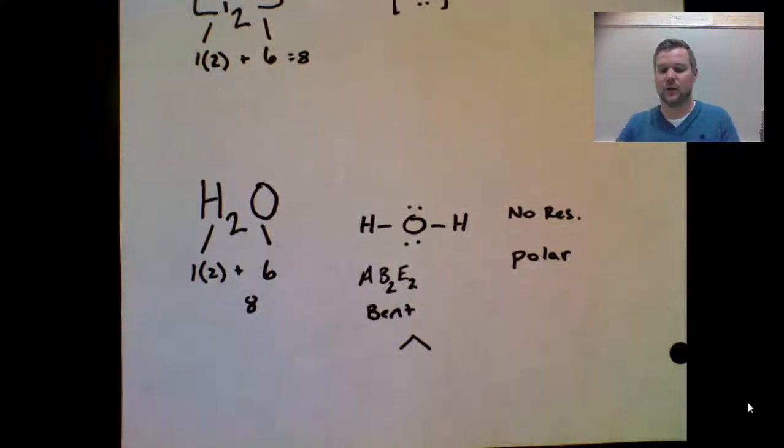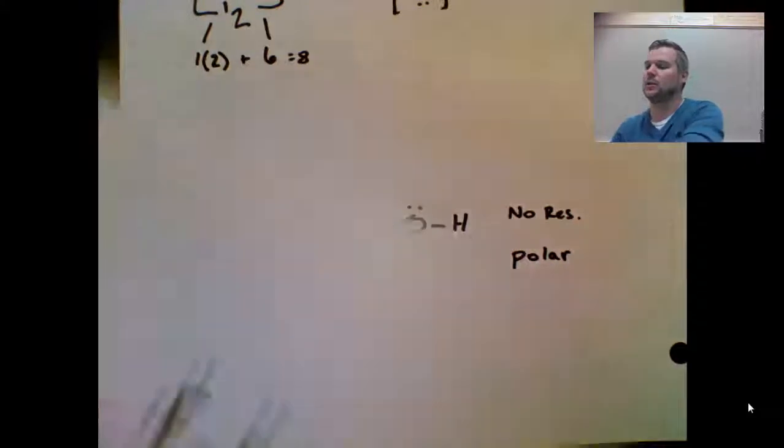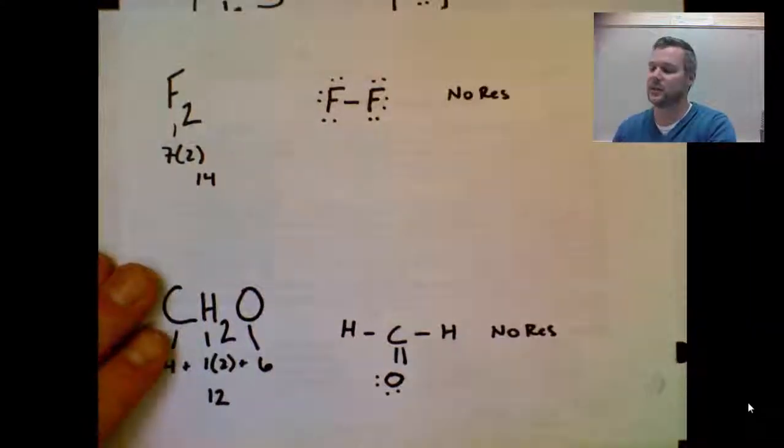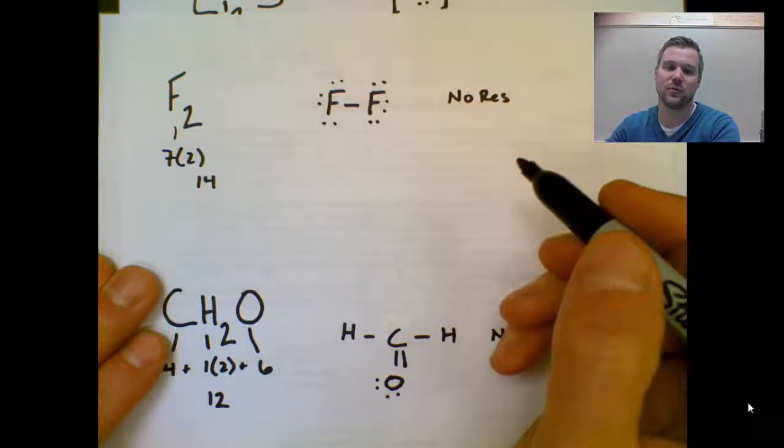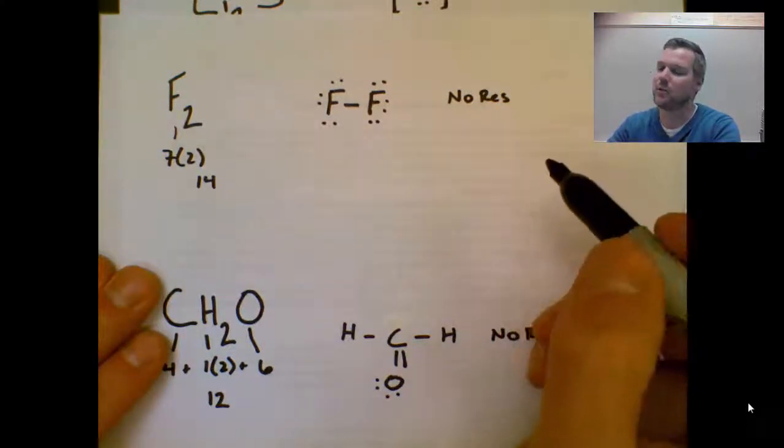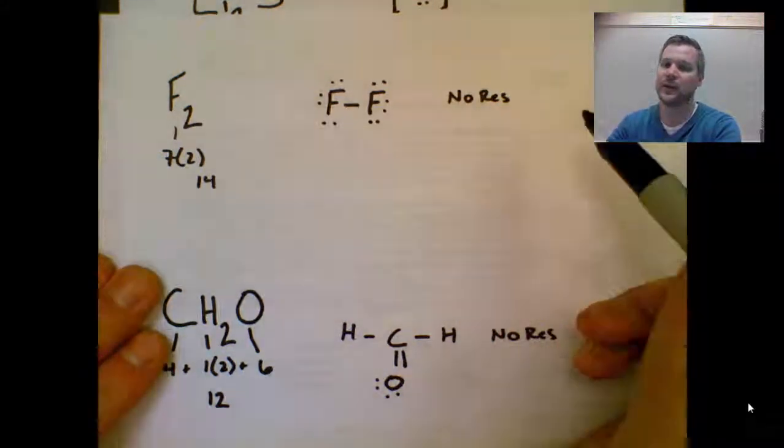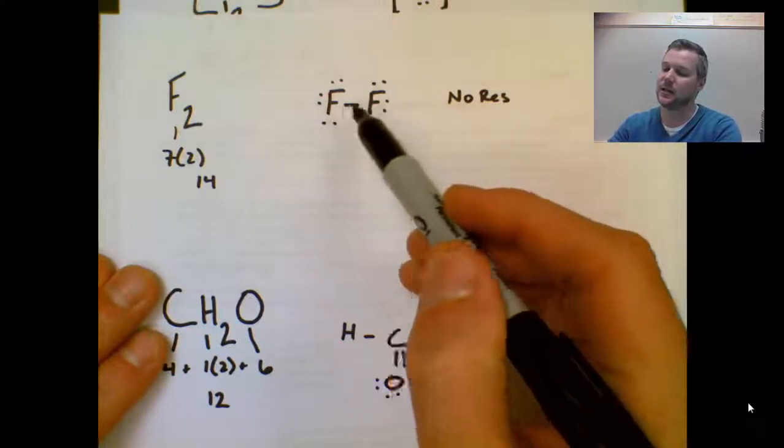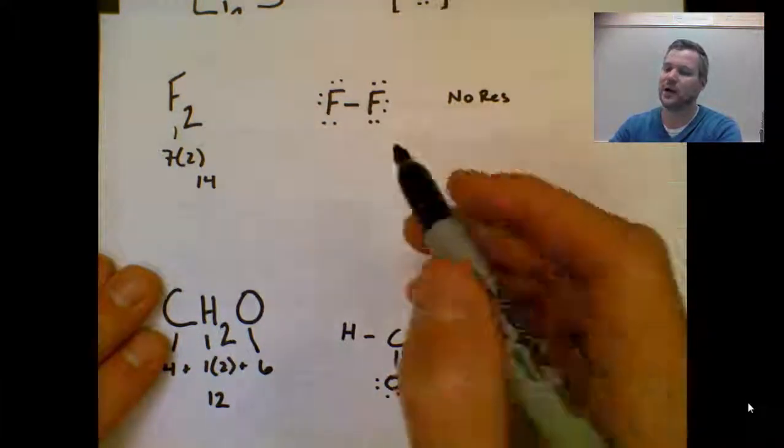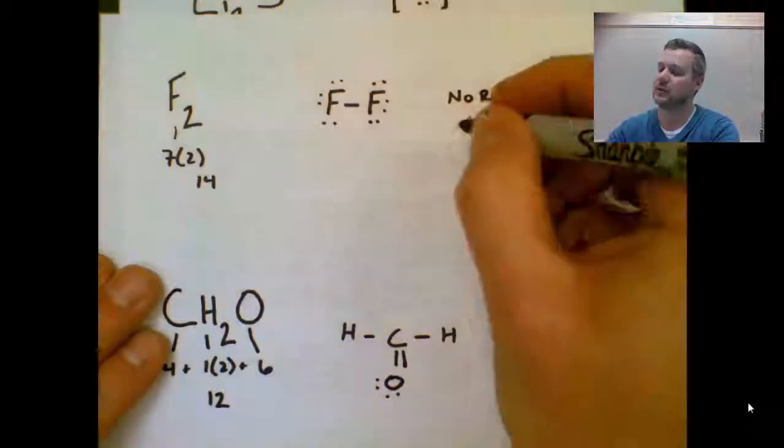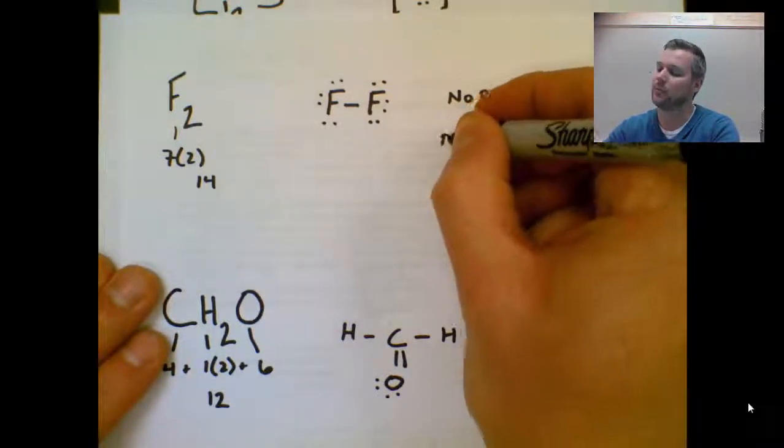Okay, moving to another sheet. So since this is just two atoms, you can't do a central atom for geometry, but we can talk about polarity. Since this is the exact same atom bonded to itself, this bond itself is non-polar covalent, which makes this a non-polar molecule.